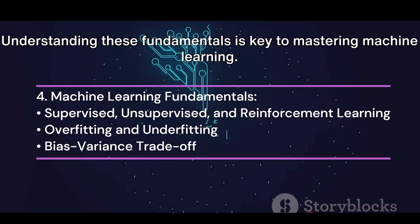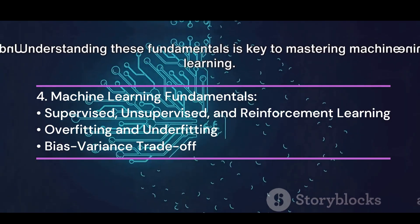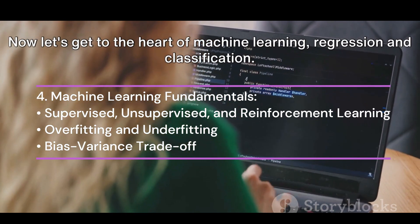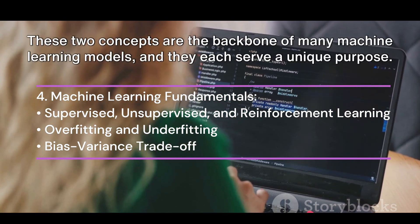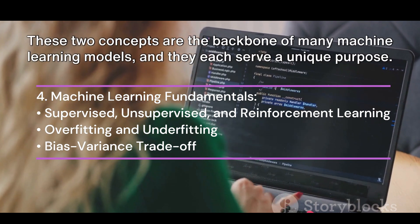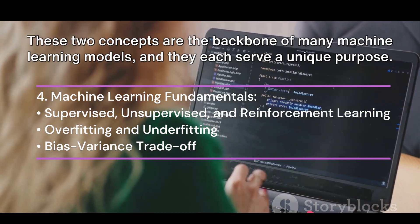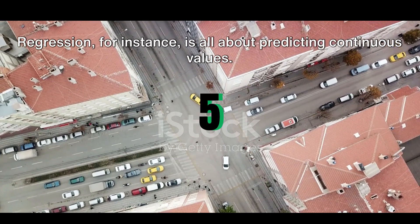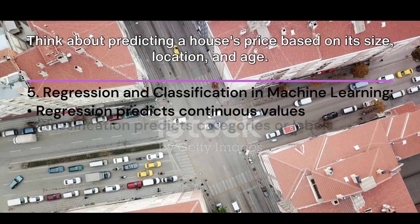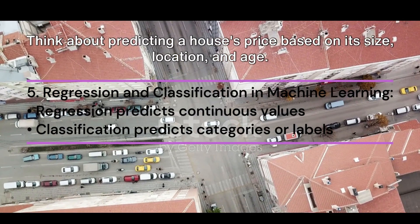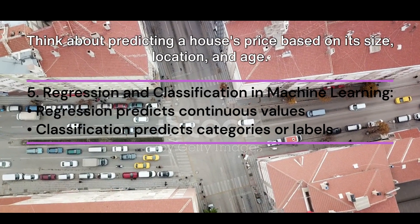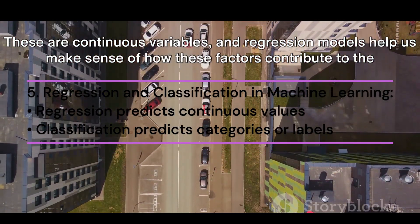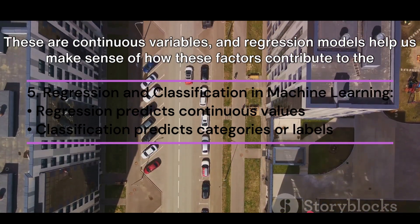Understanding these fundamentals is key to mastering machine learning. Now, let's get to the heart of machine learning: regression and classification. Regression is all about predicting continuous values — think about predicting a house's price based on its size, location, and age. These are continuous variables, and regression models help us make sense of how these factors contribute to the final price.